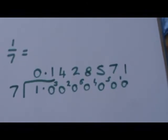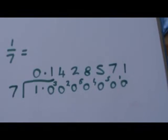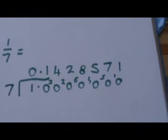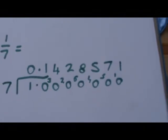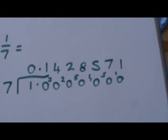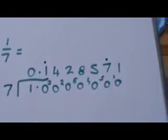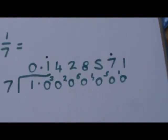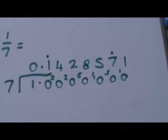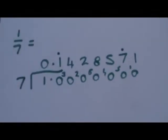It's 0.142857. 1, 4, 2, 8, 5, 7. 1, 4, 2, 8, 5, 7. So we can use the recurring symbols between the figures that recur. We can put a dot above the one and the seven. So that shows that the pattern continues. 1, 4, 2, 8, 5, 7. 1, 4, 2, 8, 5, 7.